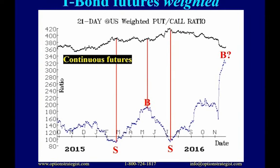T-bonds were selling off anyway, and after the election they sold off very sharply with heavy put-buying. The put-call ratio has a little curl at the top. The computer program is rating that as a buy signal, though I put a question mark on it because we're at such a high level that numbers coming onto the moving average need to start dropping. Technically it is a buy signal on the continuous futures chart. You can buy calls on the TLT long-term bond ETF if you want to take the signal, though we have not taken this signal ourselves yet.